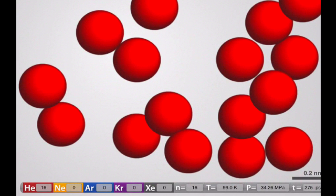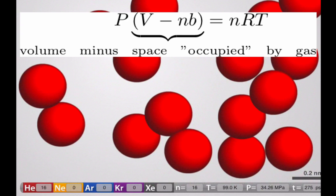We can take this into account in our modeling by changing the volume that we look at. So instead of looking at the total volume, we'll look at essentially the space between the molecules. That is the volume minus the space occupied by the gas.